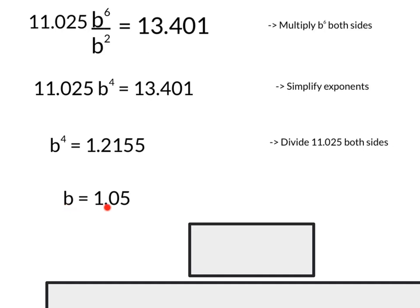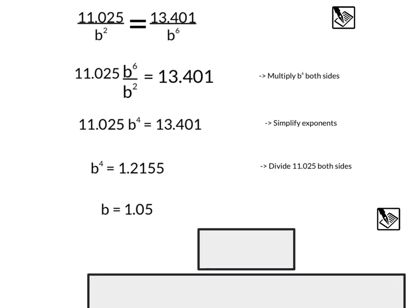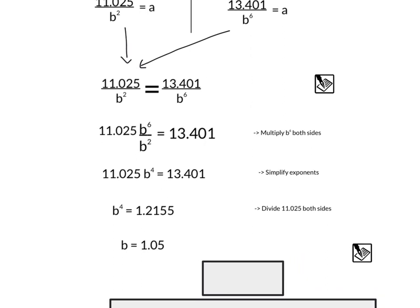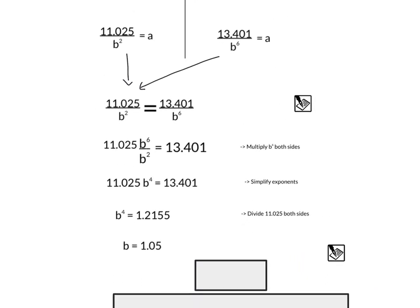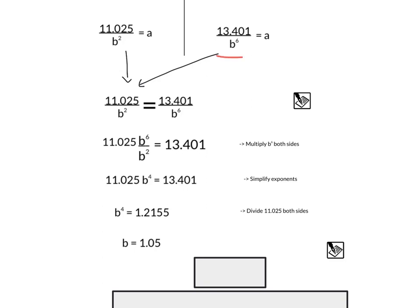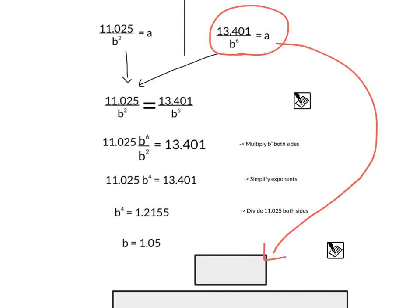Okay, now that we know that b equals 1.05, think back to how we solved systems of linear equations. What we need to do here is go find one of our other equations, and I think I'll just maybe take this one right here because it's kind of accessible. And we are going to now try to take that b value that we found, plug that back in into this equation, 13.401 divided by b to the sixth equals a.